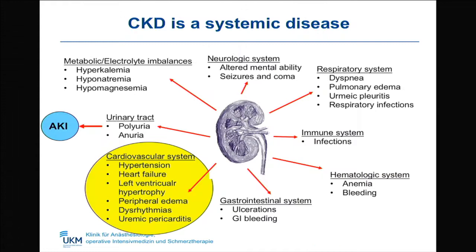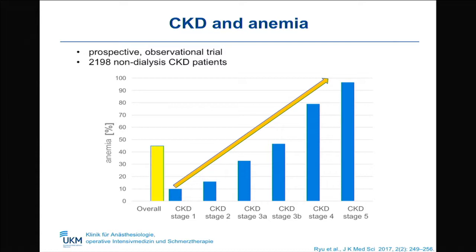Focusing on the hematologic system: a prospective observational trial of 2,100 non-dialysis CKD patients analyzed the incidence of anemia across different CKD stages. The overall incidence of anemia was about 45%, and the higher the severity of CKD, the higher the incidence — reaching about 95% in stage 5. The subgroup of patients with diabetes showed a significantly higher risk for anemia compared to those without diabetes.